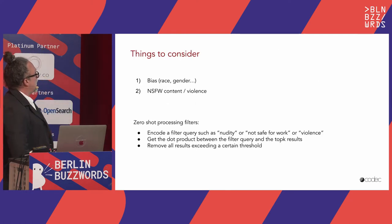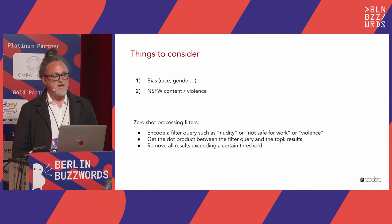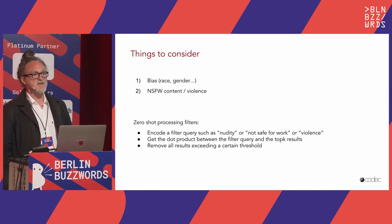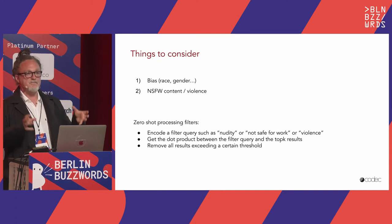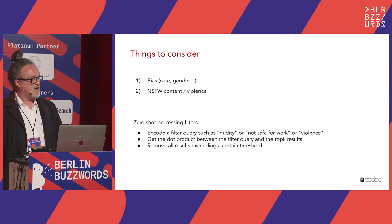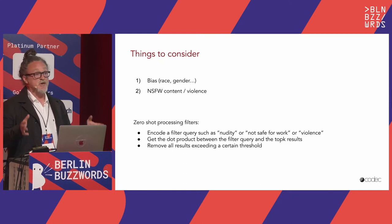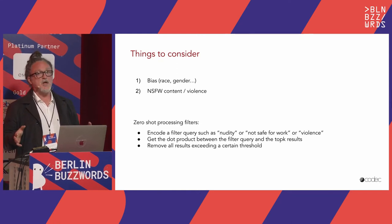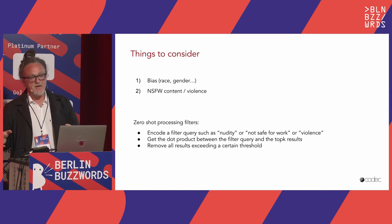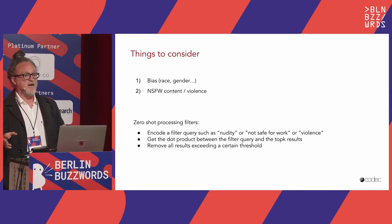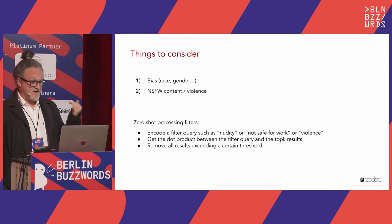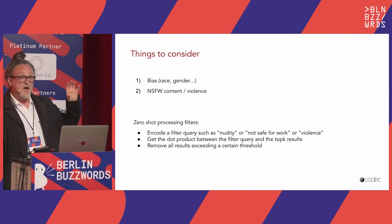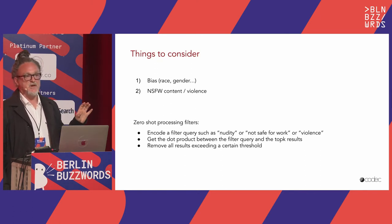An important consideration — and one of the hottest topics in AI research — is bias. These large models learn from data, and data is far from perfect. You need to be very careful not to inherit any racial, gender, or other bias into your model, which may exist in your data without you knowing.